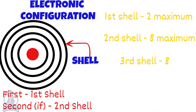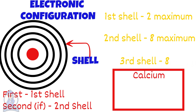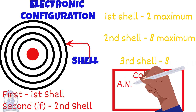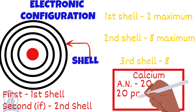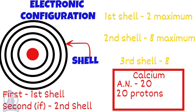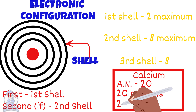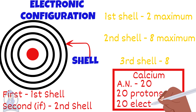This is called the electronic configuration. Calcium will be an example. Calcium has an atomic number of 20, which tells us that it has 20 protons. Since protons and electrons are equal, this means that there are 20 electrons too.